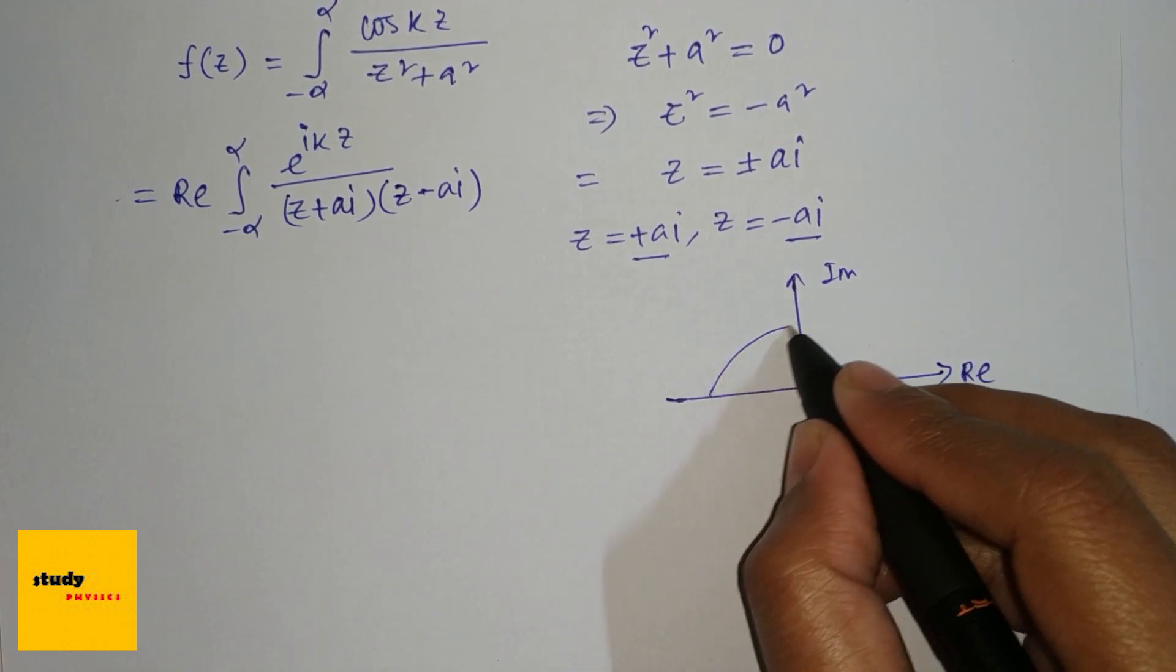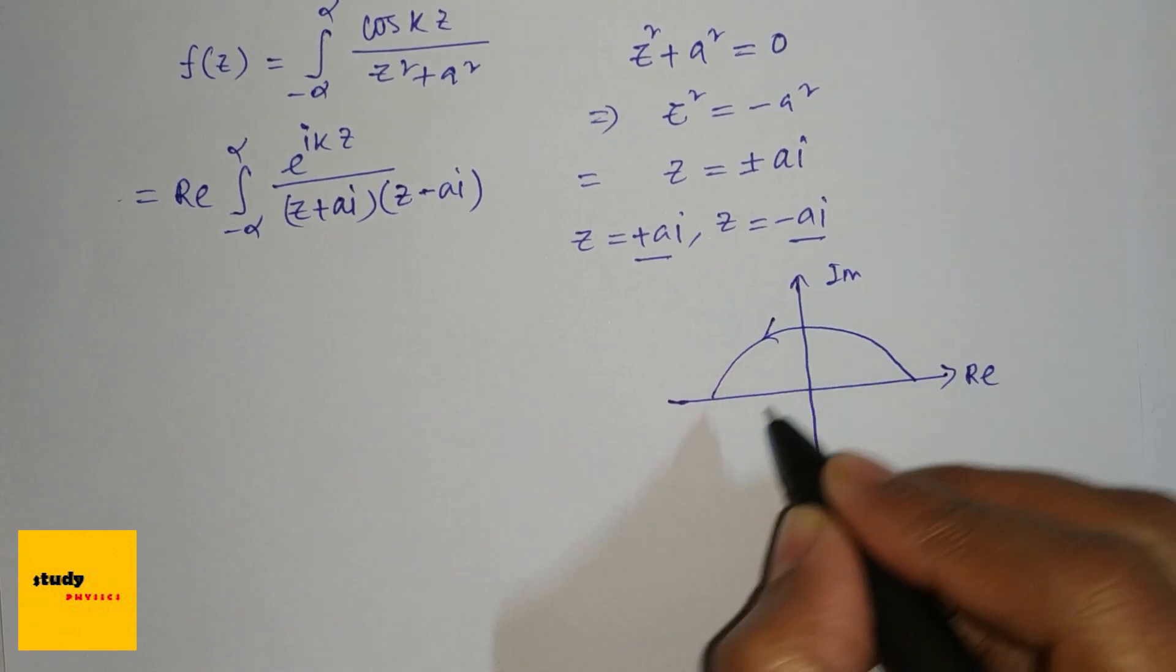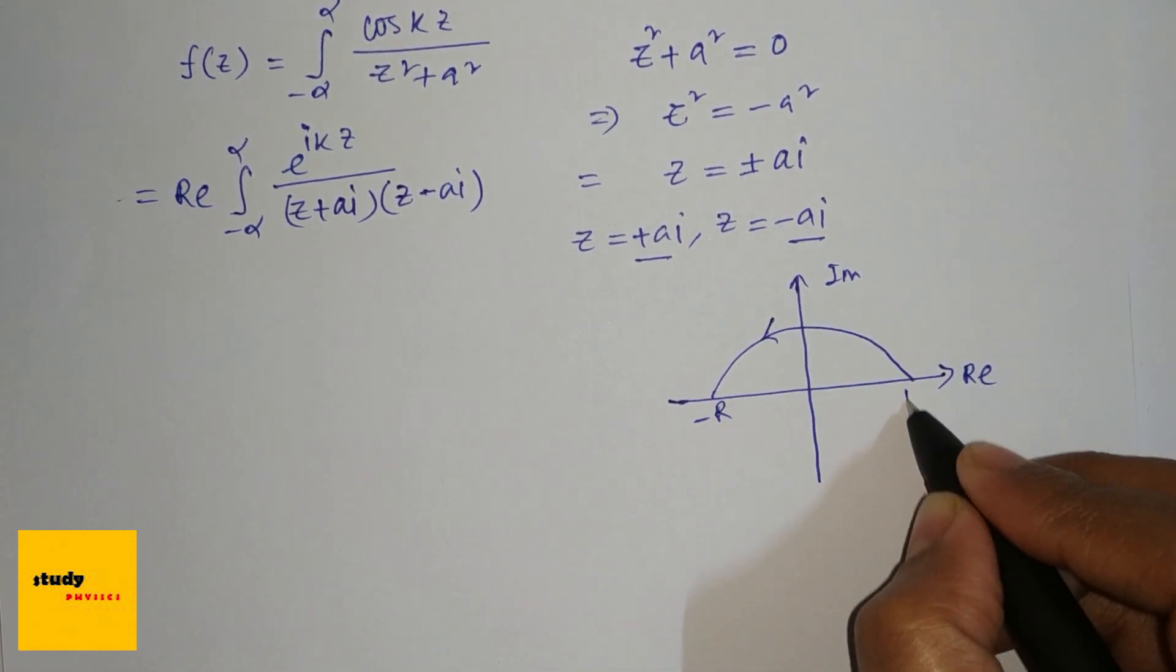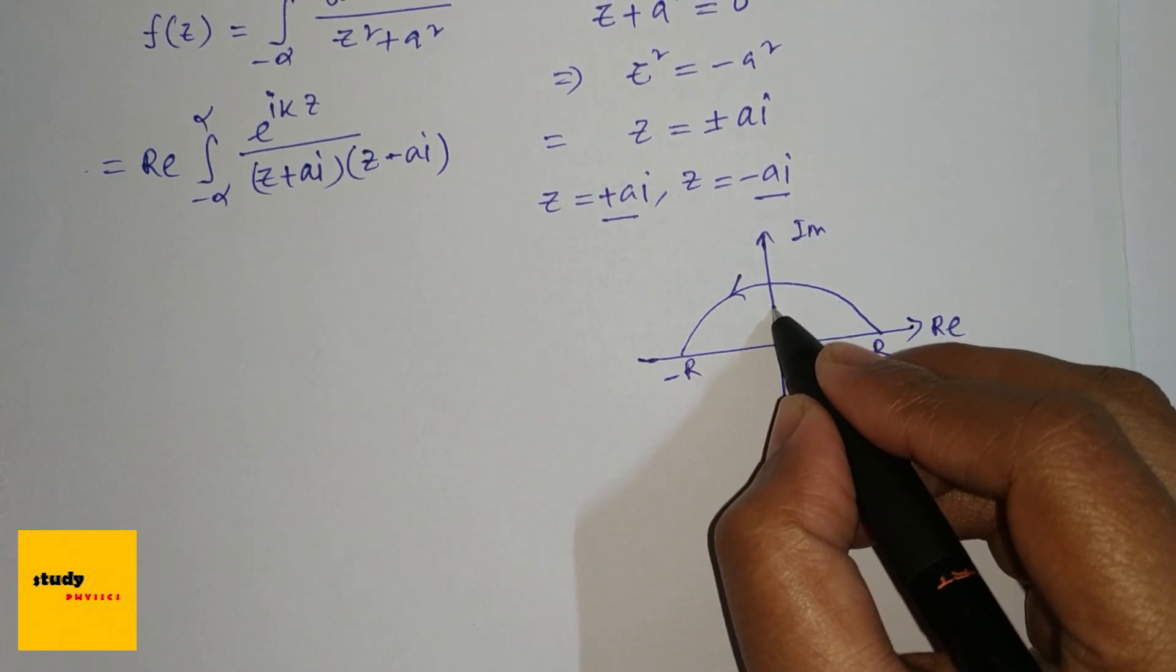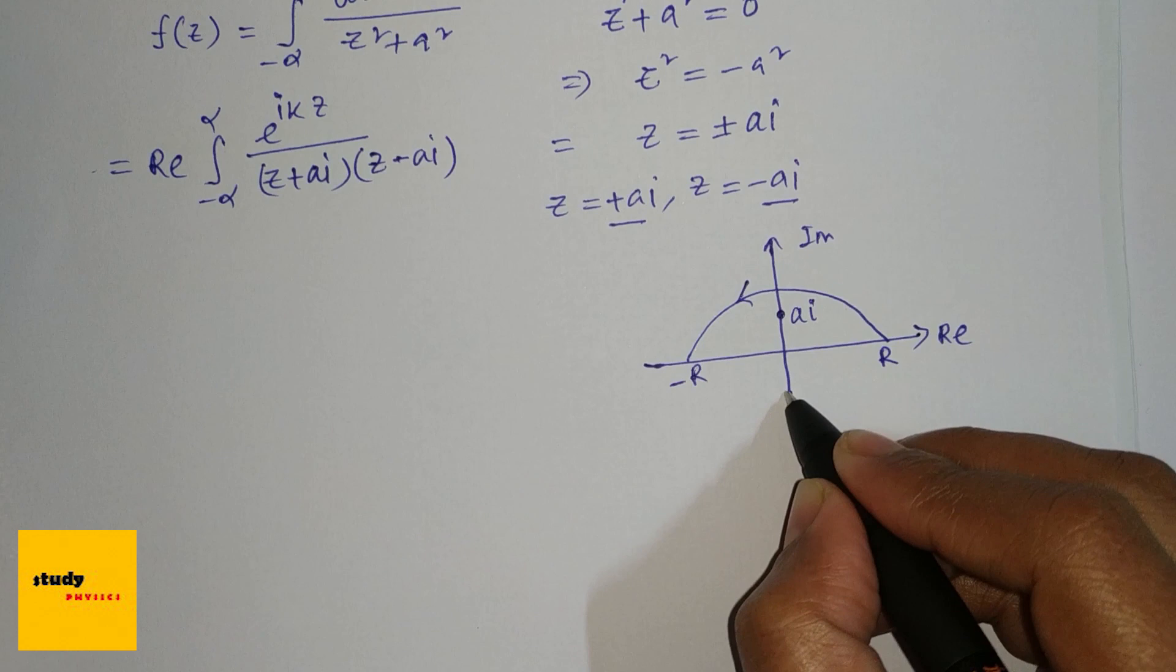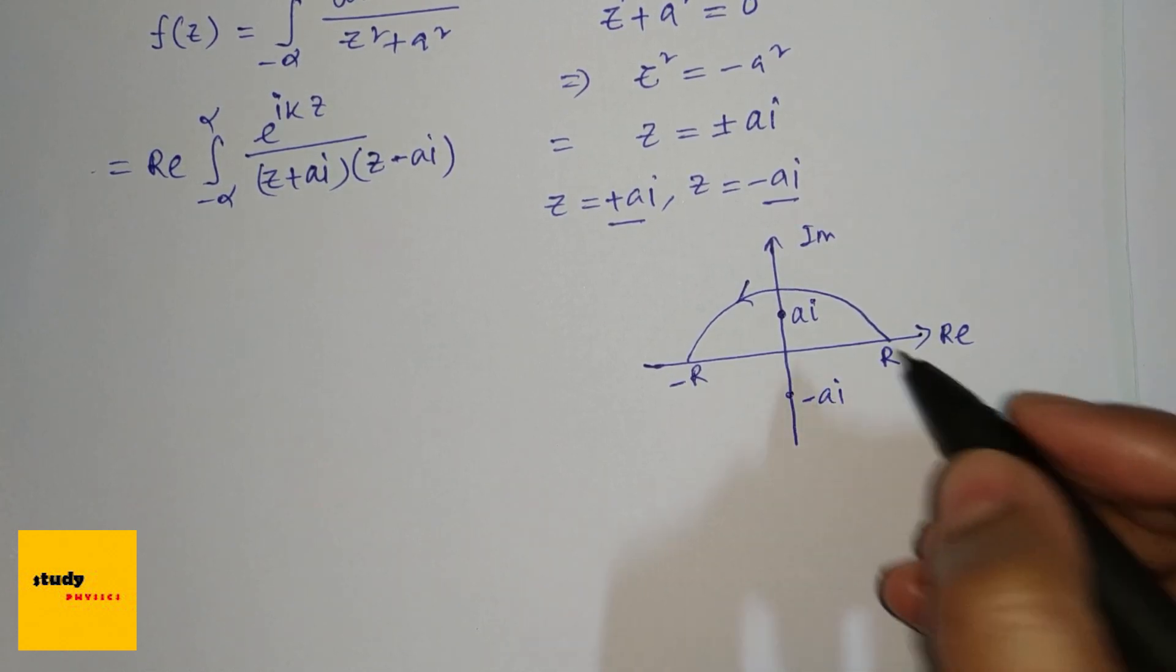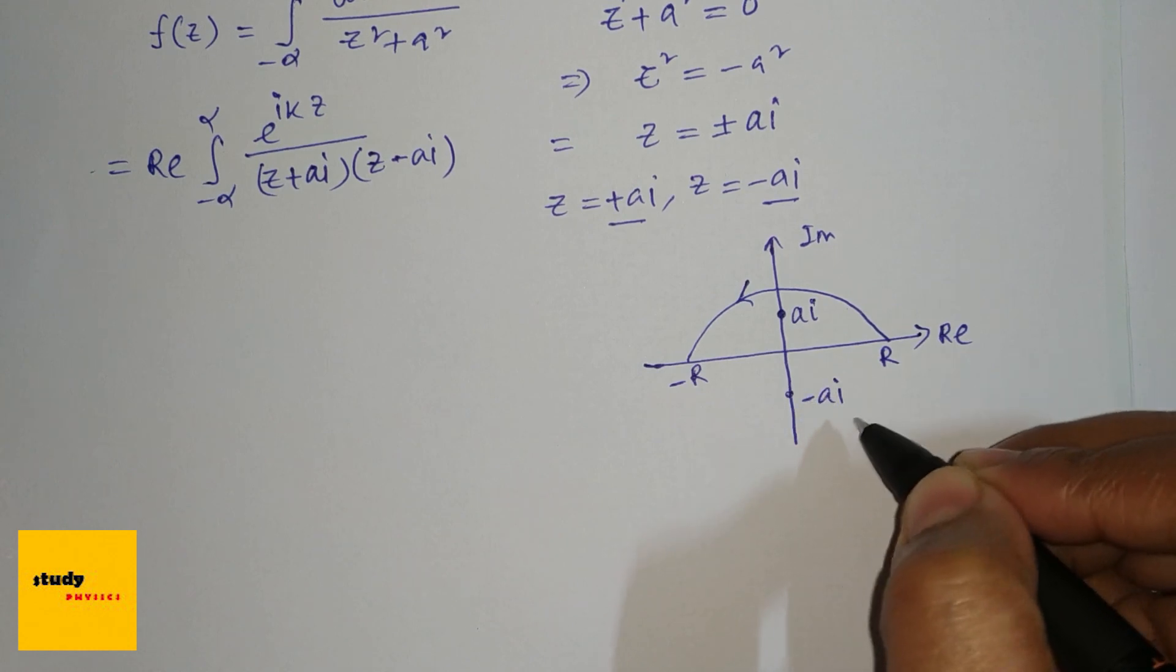If we put the poles on the contour, this is ai and this is minus ai. We have to deal with only plus ai because minus ai is not in the contour.